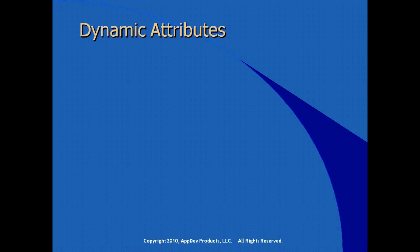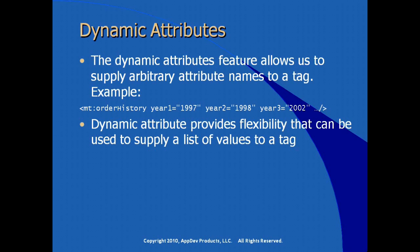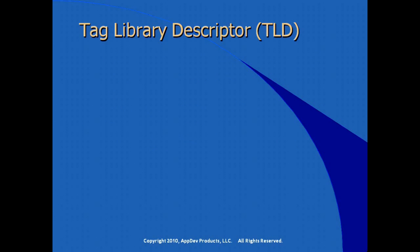We also have the ability to pass dynamic attributes. Dynamic attributes allow us to supply arbitrary attribute names to a tag. For example, our custom order history tag could have attributes year one, year two, year three, and the tag code could process multiple or an unknown number of values to create dynamic lists or dynamic maps. Dynamic attributes give us the flexibility to supply a varying number of values. In order to define the expected behavior of our tags, we have to create what's called a tag library descriptor.